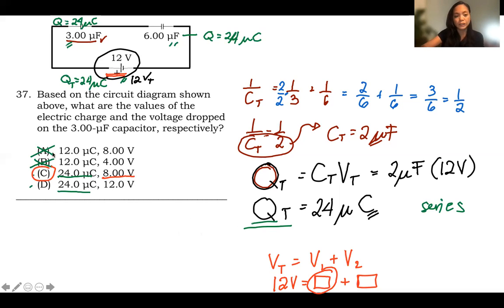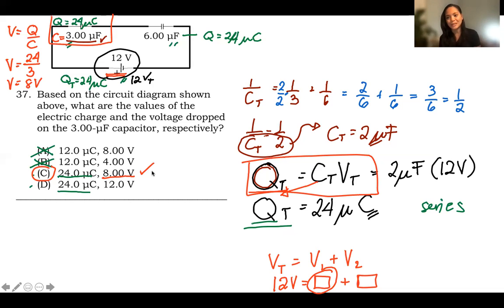To get the voltage, if you have the capacitance and the charge already, that's Q divided by C. It's just manipulation of this formula. So V is equal to Q over C. That's 24 divided by 3. That is 8 volts. So the answer is letter C.